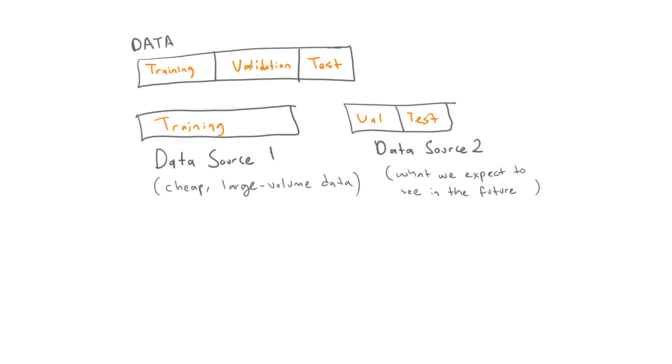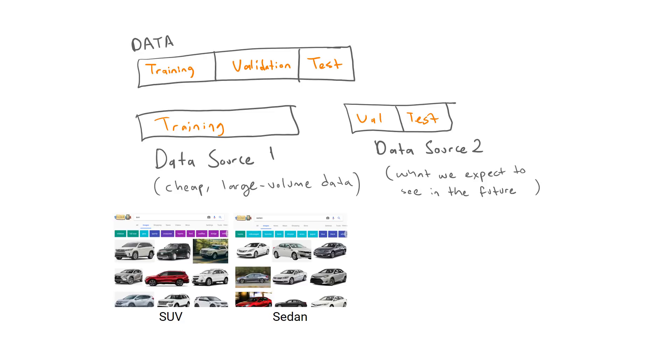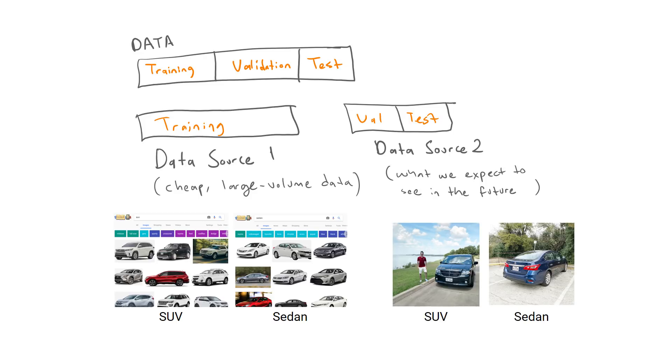It might also be practical in some cases to train a model on loosely labeled large volume data such as images crawled from the web and test on a smaller dataset with better quality labels such as images manually annotated by humans.